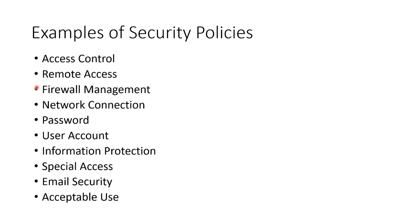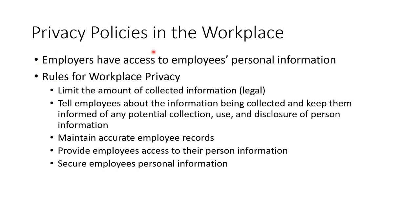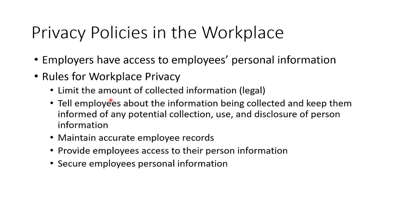Sub-parts of your overall information security policy include access control, remote access, firewall, network connections, password, user accounts, how to protect information, who has special access, email, and acceptable use. There will also be privacy policies, which are for HR but dovetail with IT as well. Employers typically have access to employee personal information, so there must be workplace privacy policies involving your legal team. It's for IT people to implement based on what is required — you tell people what will be collected, maintain accurate records, provide employees access to their information, and keep it secure.